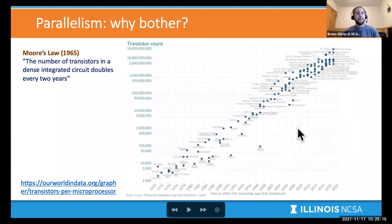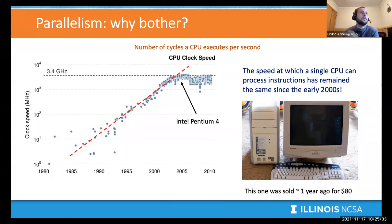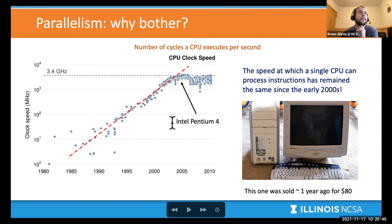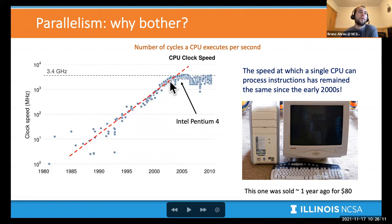Transistors keep getting more and more packed. But if you look at the clock speed of a single processor — the number of cycles the CPU executes per second — you'll see that around the early 2000s things started getting flat. Computers were getting faster and faster, but by the time we got to the Intel Pentium 4, things slowed down and got pretty flat. We can't really get faster processors anymore.